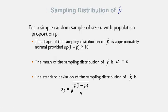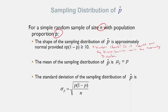Now let's put formulas to this. For the sampling distribution of p-hat for a simple random sample of size n with population proportion P, the shape is approximately normal provided a number check holds: n times P times (1 minus P) must be greater than or equal to 10. If this checks out, the distribution will be normal. I'll follow this up with a lecture working examples where you'll see me do this number check.